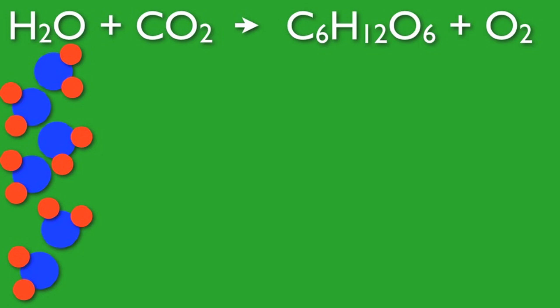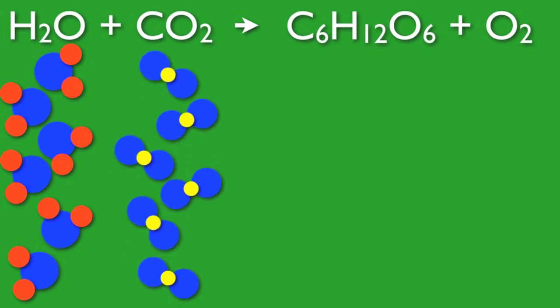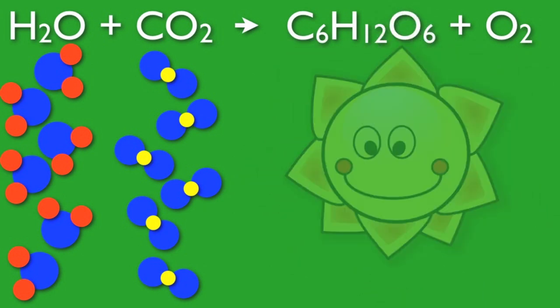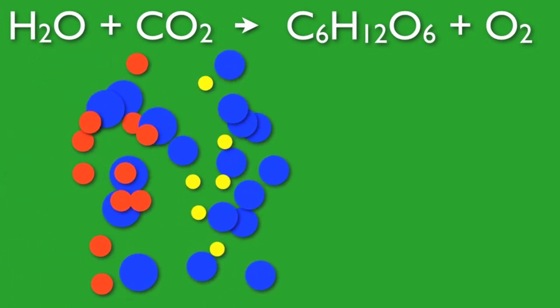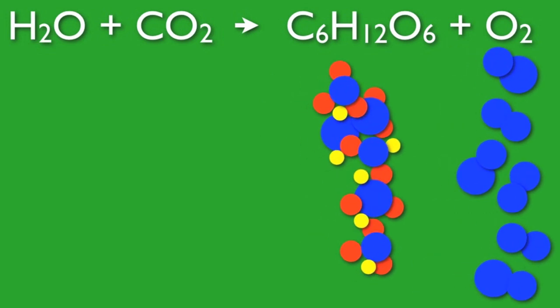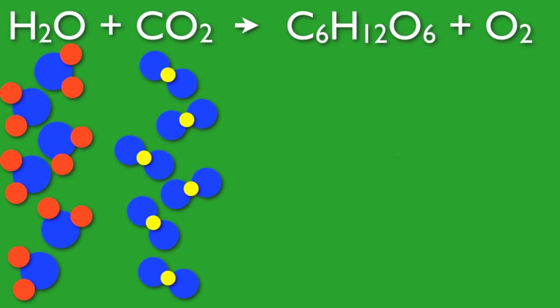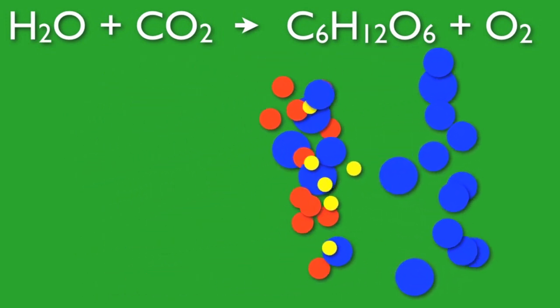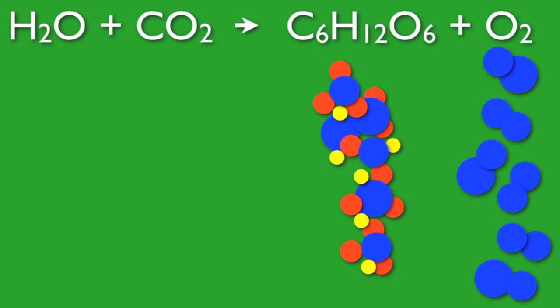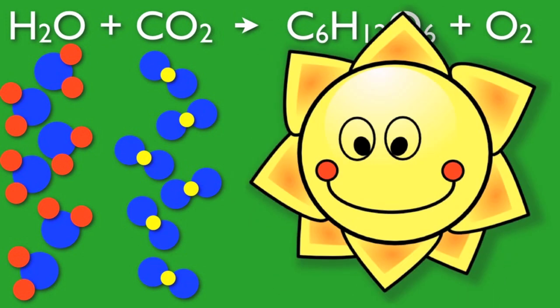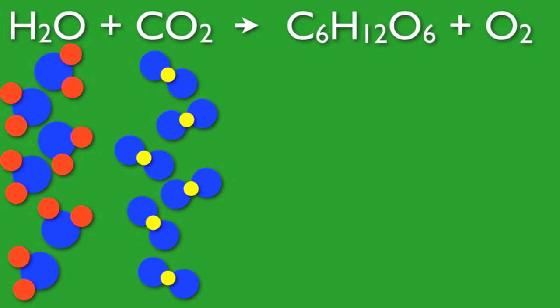Water molecules find their way into the chloroplasts of plant cells, where they are joined by carbon dioxide. With the help of the sun, water molecules and carbon dioxide molecules are broken apart and rearranged to create glucose and oxygen. Six water molecules and six carbon dioxide molecules are broken apart, and their atoms are rearranged to make glucose and six oxygen molecules. This process continues with the help of the sun and the chloroplasts of all plants.